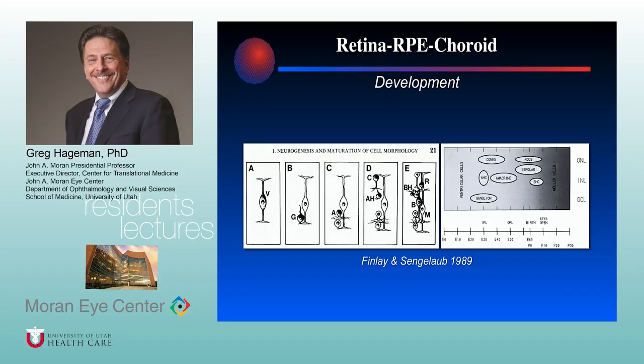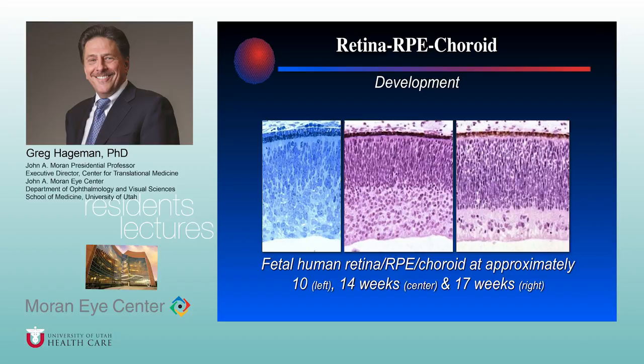The neural retina goes through differentiation over time. The earliest cells born in the retina are the ganglion cells, and probably the last cells to form are the rod photoreceptor cells — a very logical process of development. In these human eye photos from our lab, at about 10 weeks you can see mitotic activity in the retina, the birth of the ganglion cell layer, and early differentiation of the two outer nuclear layers.